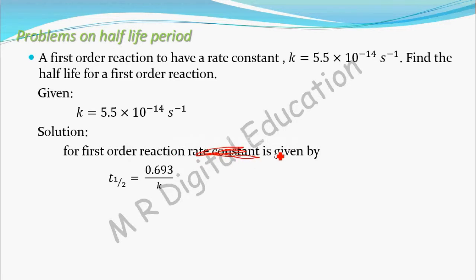For first-order reaction, you know that t-half equals 0.693 divided by k.